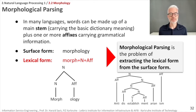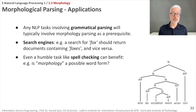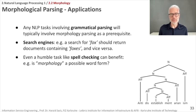There are many applications that use morphological parsing. Grammatical parsing and NLP tasks will typically involve morphological parsing as a prerequisite. Search engines also benefit — if you search for 'fox,' documents containing 'foxes' should also be returned. Spell checking can benefit from morphology by determining whether a given word is a possible word form, helping verify if something is correctly written. These are just a few NLP tasks, like information retrieval and spell checking, where morphological parsing is valuable.